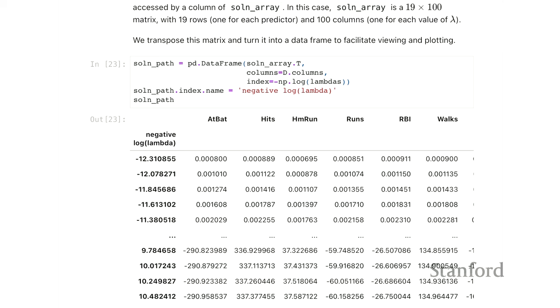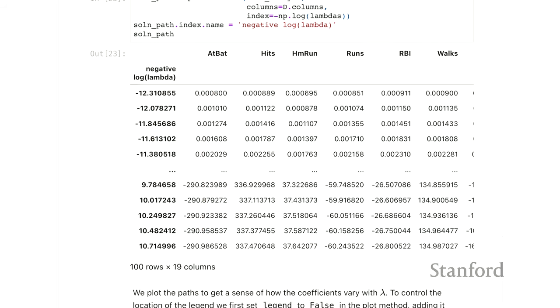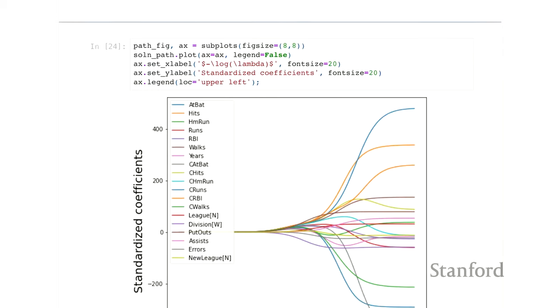Okay, and so we asked for this path, and it gives us a 19 by 100 matrix. There are 19 features, and we have 100 values of lambda. So each row of this is going to be a path for a single coordinate, and we'll plot those in just a second. So we can look at the data. And here what I've done, scikit-learn doesn't actually have variable names, but I've added some variable names to the features, and an index of lambda values to be a little more informative.